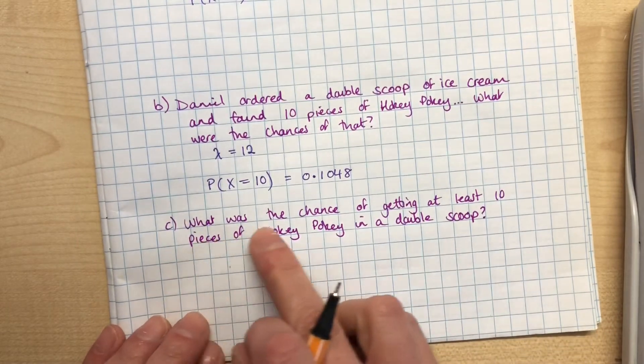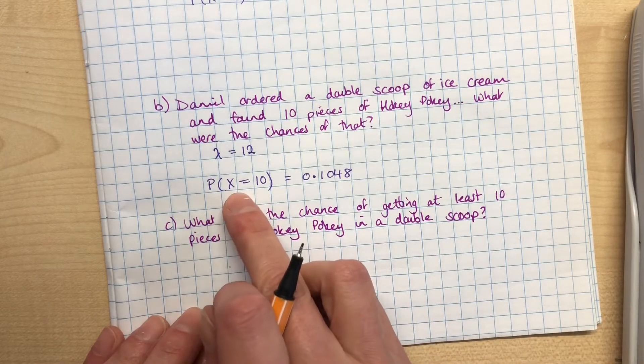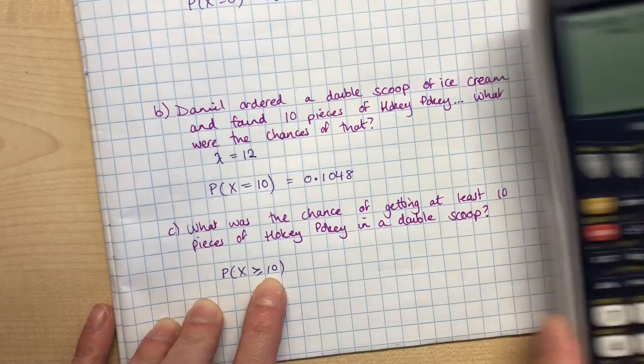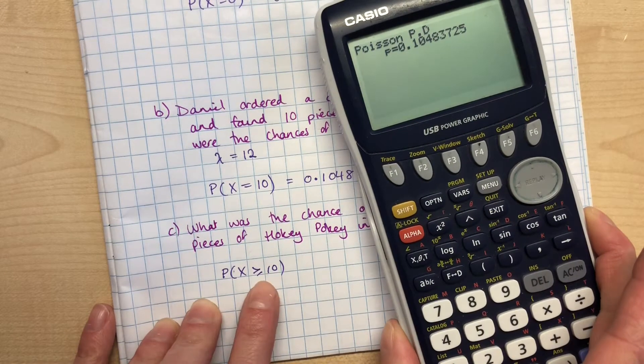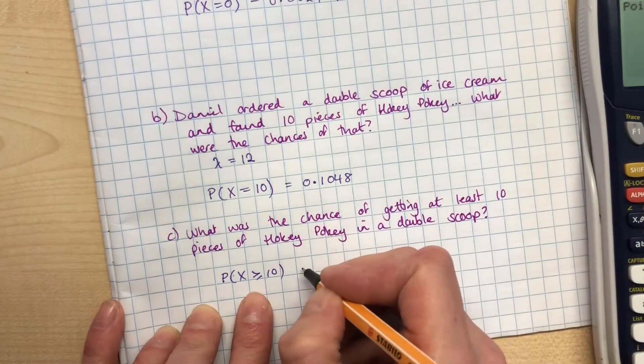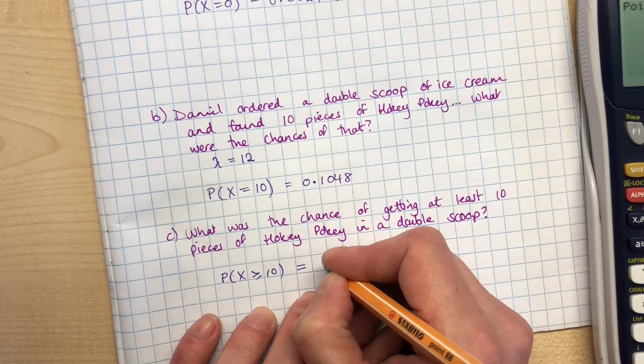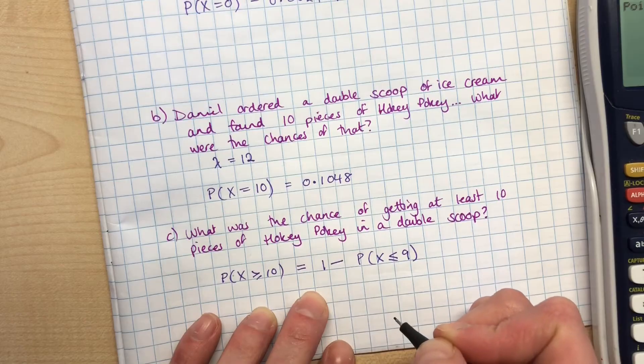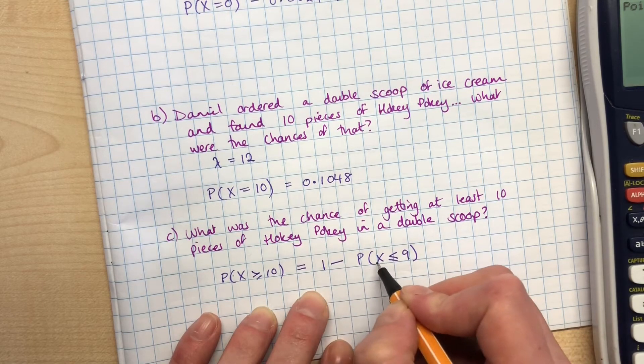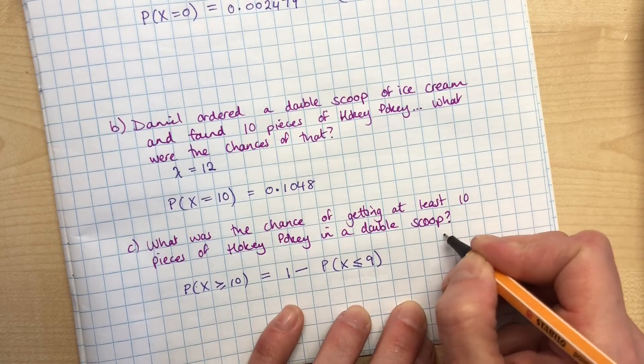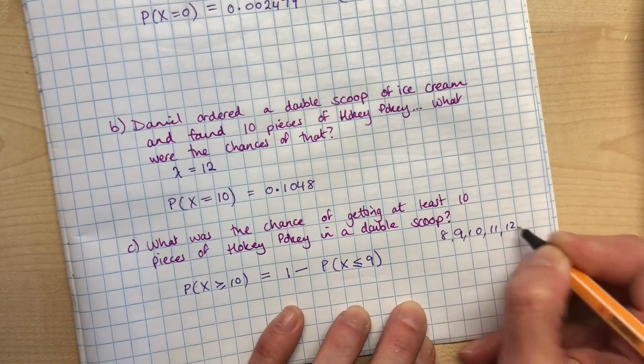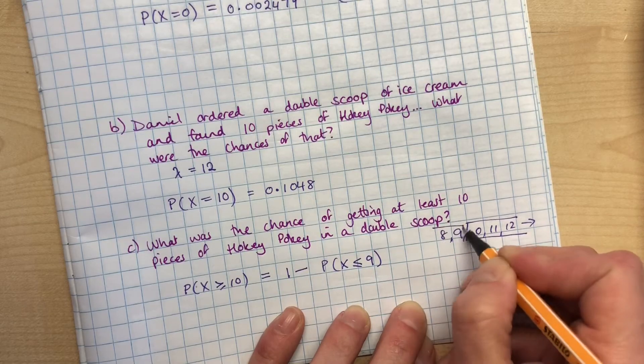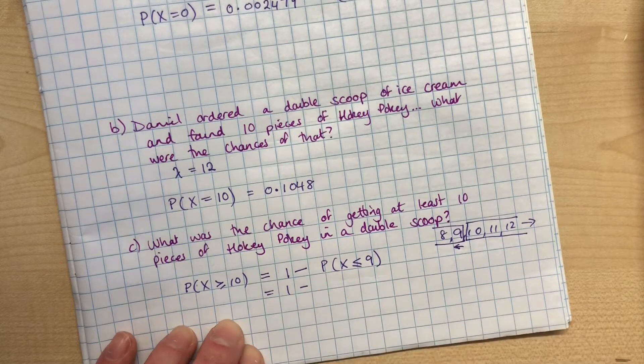All right, what was the chance of getting at least 10 pieces of Hokey Pokey in a double scoop? So now not exactly 10, but at least 10 - so 10 or more. So X is going to be greater than or equal to 10. Now our calculator can cope with cumulative numbers like that - more than one at a time - but it only goes up to and including a point, so we need to rewrite that in terms of up to and including something. So it would be the opposite of looking at if we went less than or equal to 9. So if it's the opposite, we're going to do 1 minus, since probabilities always add up to 1. So we'll do 1 minus the probability of everything up to and including 9. If you want a little picture to kind of imagine that - if we were doing all of the numbers of Hokey Pokey pieces that we could get, and they go on forever, if we wanted to get 10 or more Hokey Pokey pieces, that's the opposite to doing 9 or less.